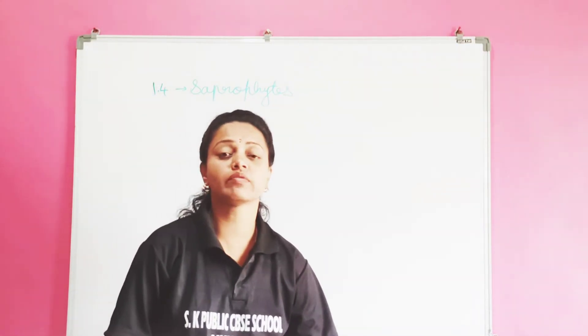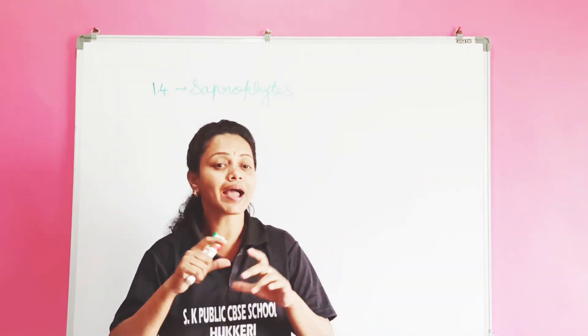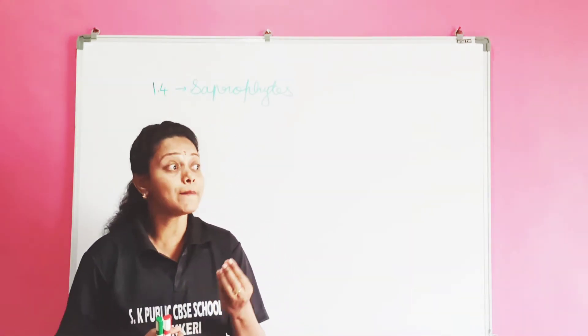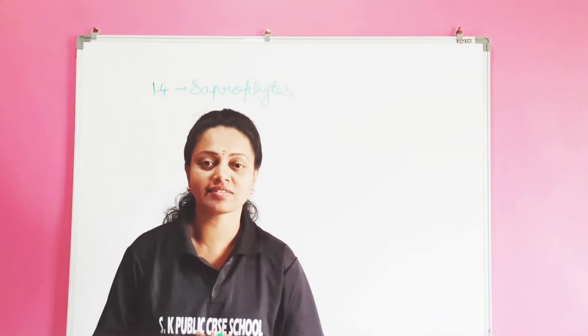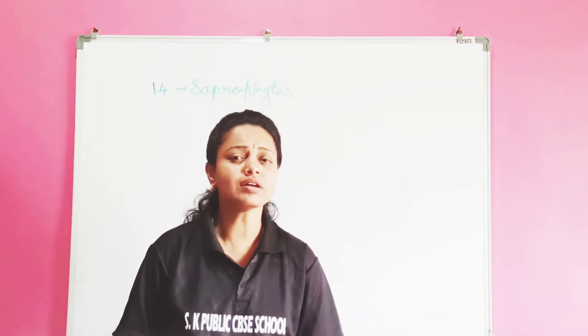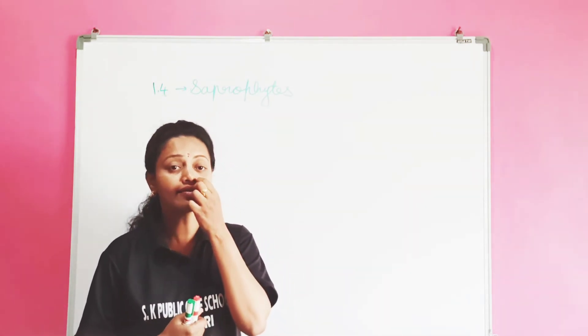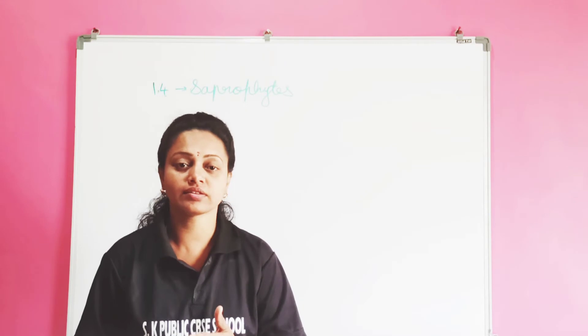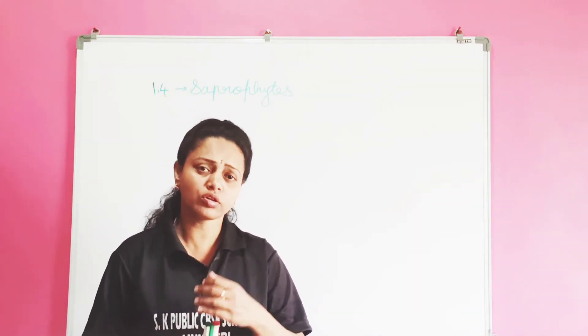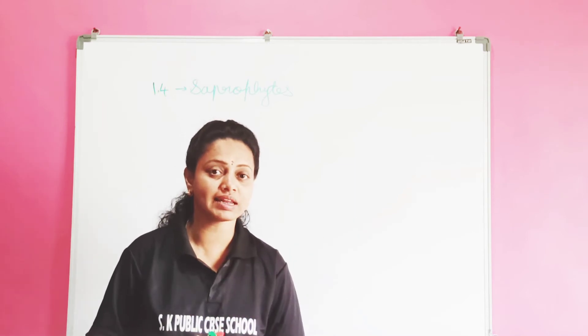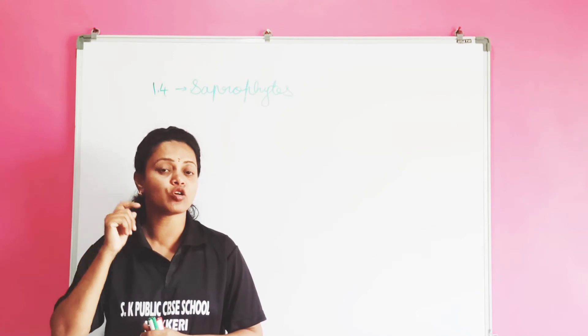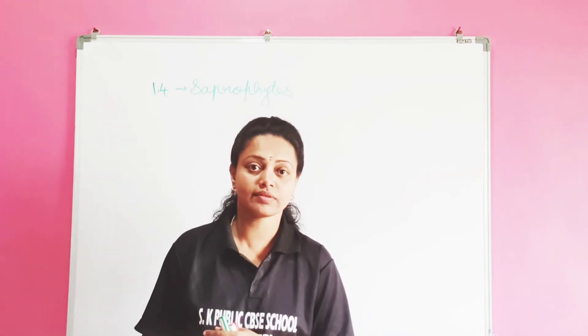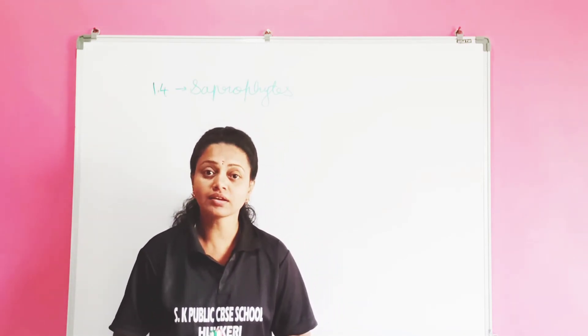Saprophytes. Dear students, you might have seen whenever you bring from supermarket they will pack vegetables like mushrooms. You may have also seen the umbrella-like structure growing in rainy season. Those are nothing but different types of mushrooms. Let us find out what type of nutrients they need to survive and from where they get them. Have you seen the small umbrellas during rainy season growing on the barks of trees? Small white and yellow patches. These are not animals, these are also plants. But from where do they get the nutrients?